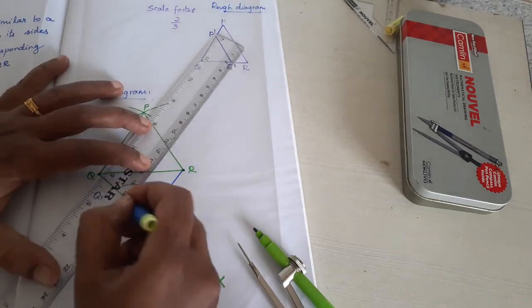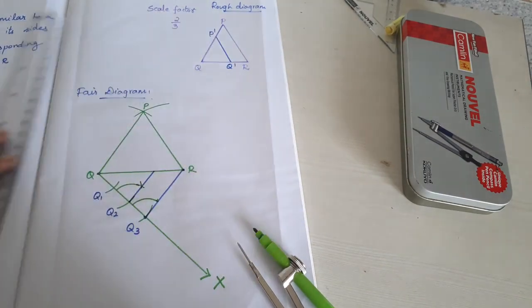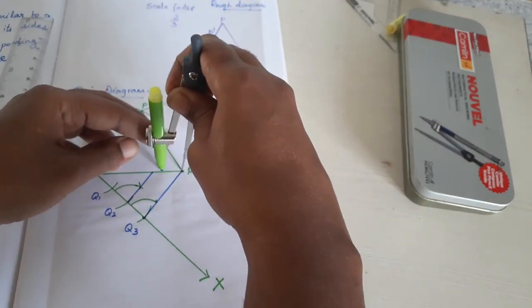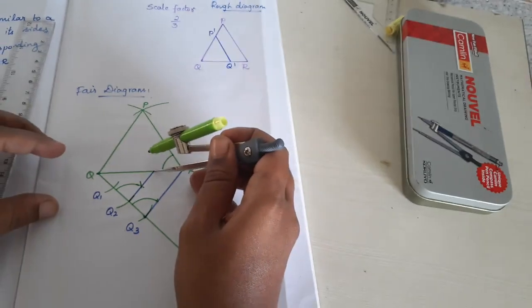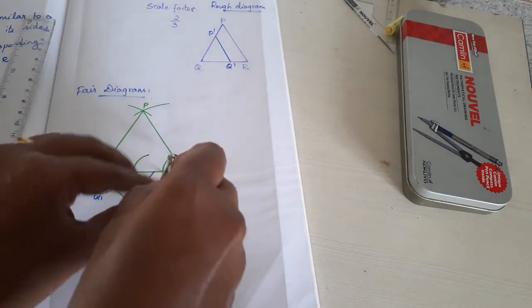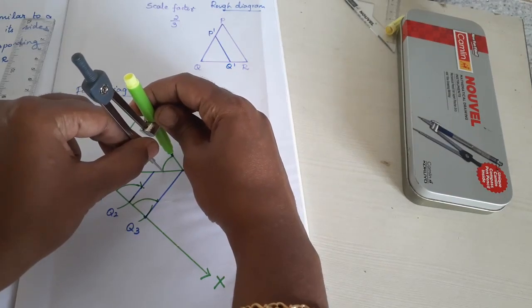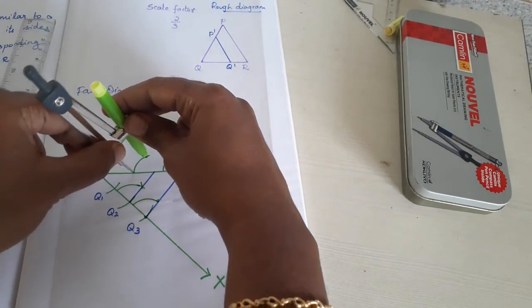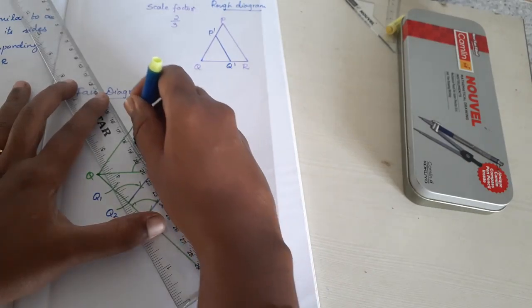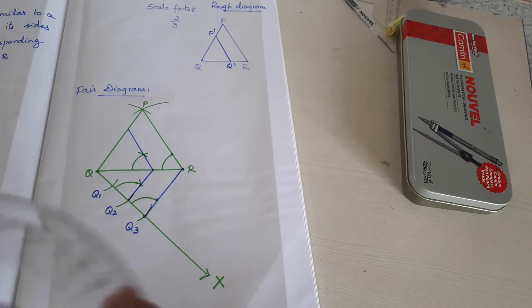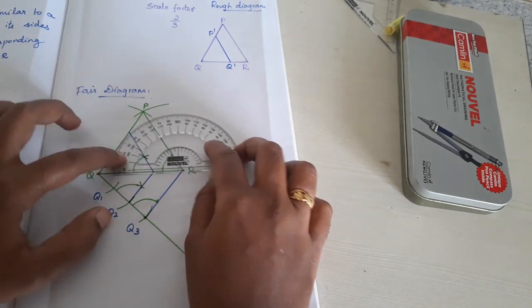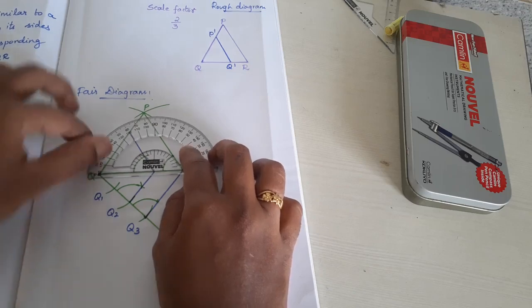For the upper portion, repeat the same steps: from the 1st arc, draw a simple arc; with the same measurement, draw the same arc on the joining line. Measure this arc, then cut the previous one with that measurement. Then join. The similar triangle is ready. Check by placing your protractor: at R, I get 60 degrees, and at R dash also 60 degrees — the diagram is correct.